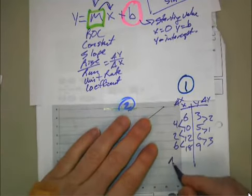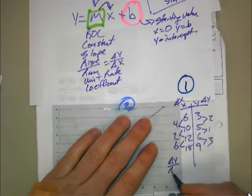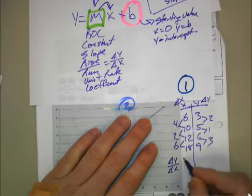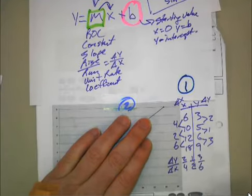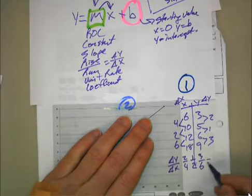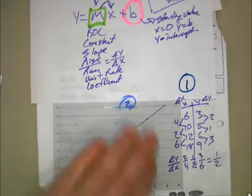And what we find is we have 2 over 4, 1 over 2, 3 over 6. And all of those reduce to one fraction called 1 half. Those are equivalent fractions, which means that in fact, our rate of change is constant and the same each time.